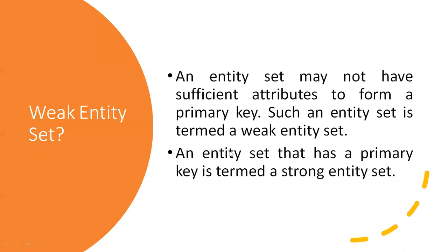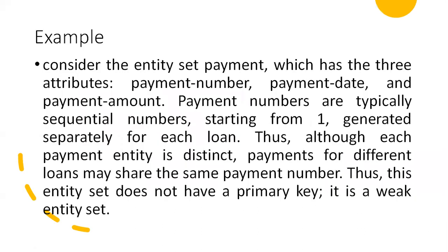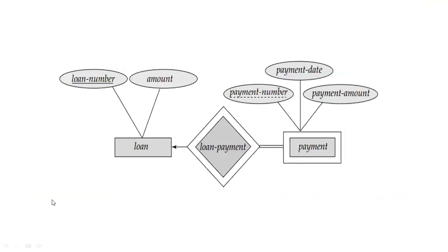To recap: an entity set may not have sufficient attributes to form a primary key — such an entity set is termed a weak entity set. An entity set that has a primary key is termed a strong entity set. In this example, payment number is not unique because depending on the loan number, payment numbers duplicate. The weak entity set is resolved by introducing the strong entity set 'loan' with its primary key. Remember that double rectangle, double ellipse, and double lines represent weak entity sets.